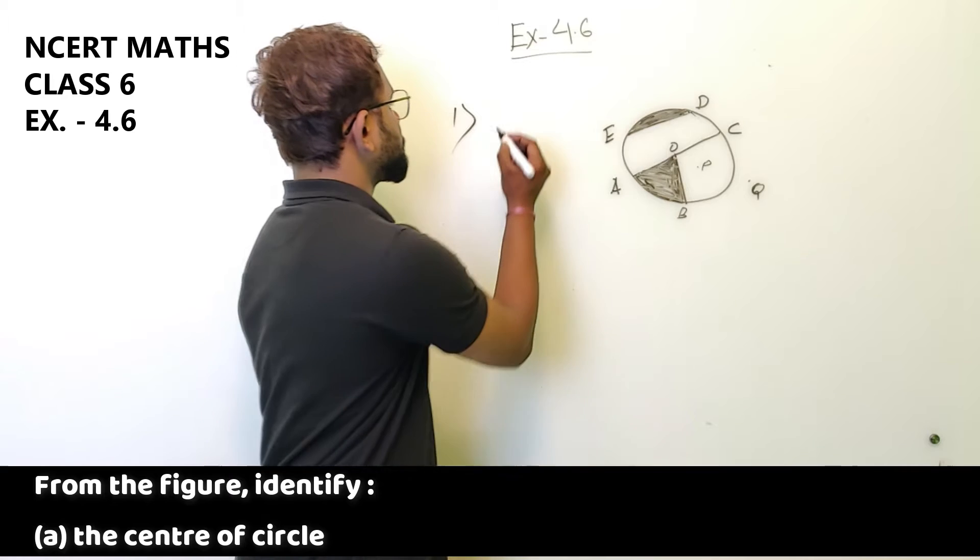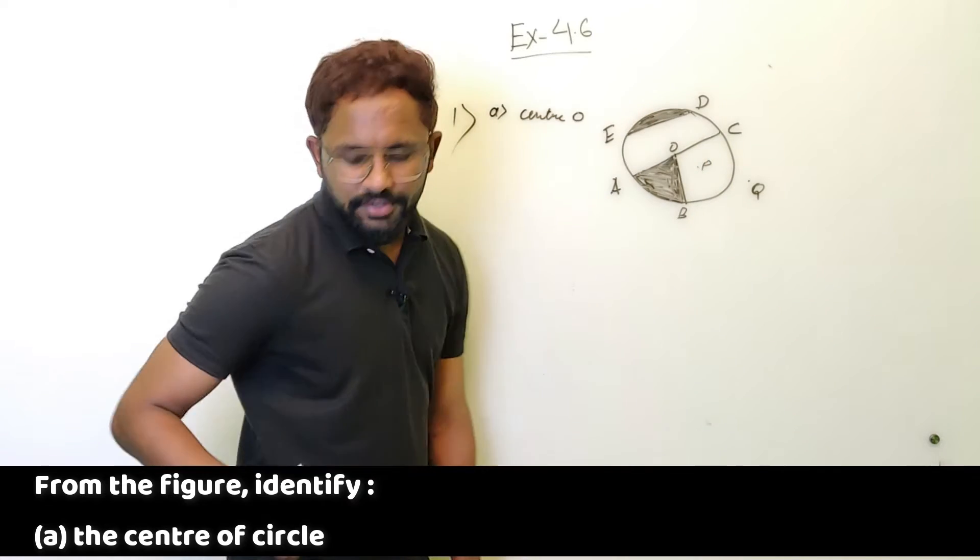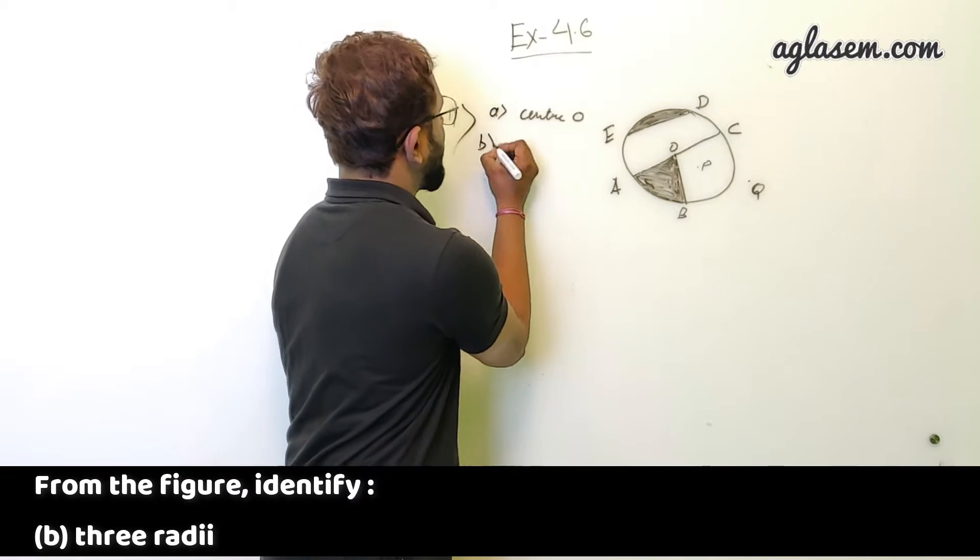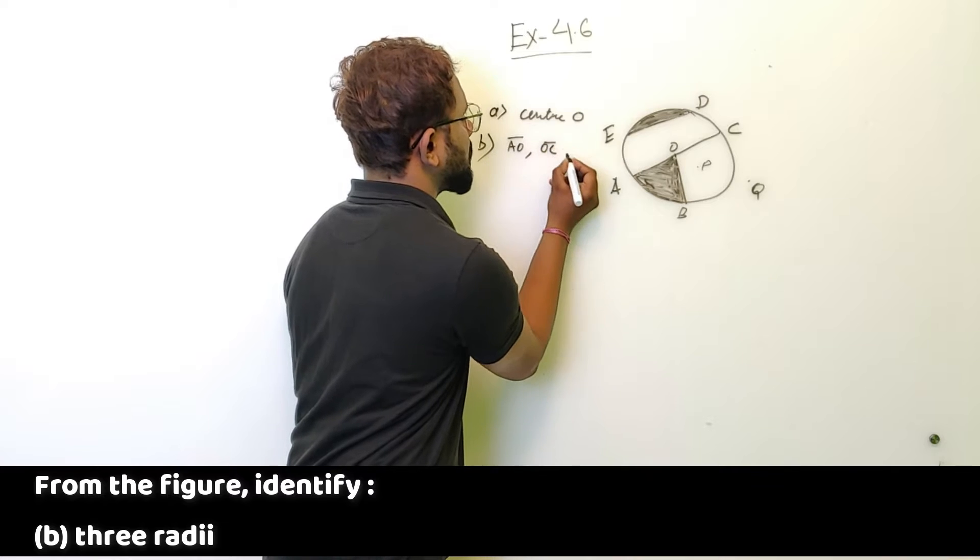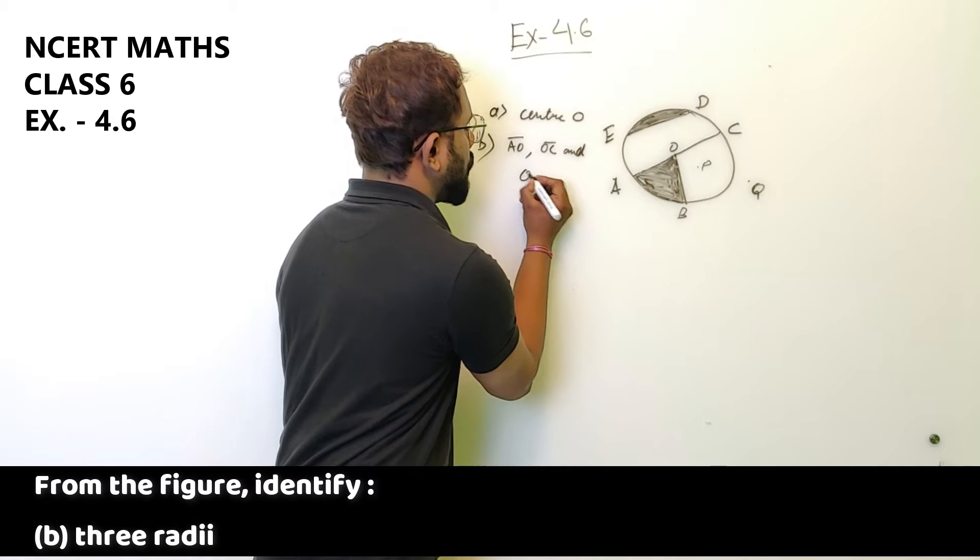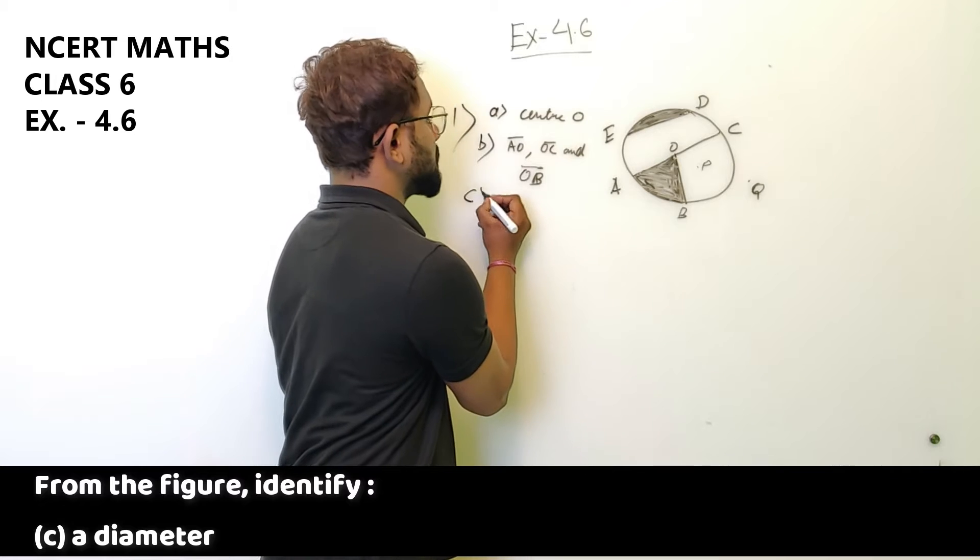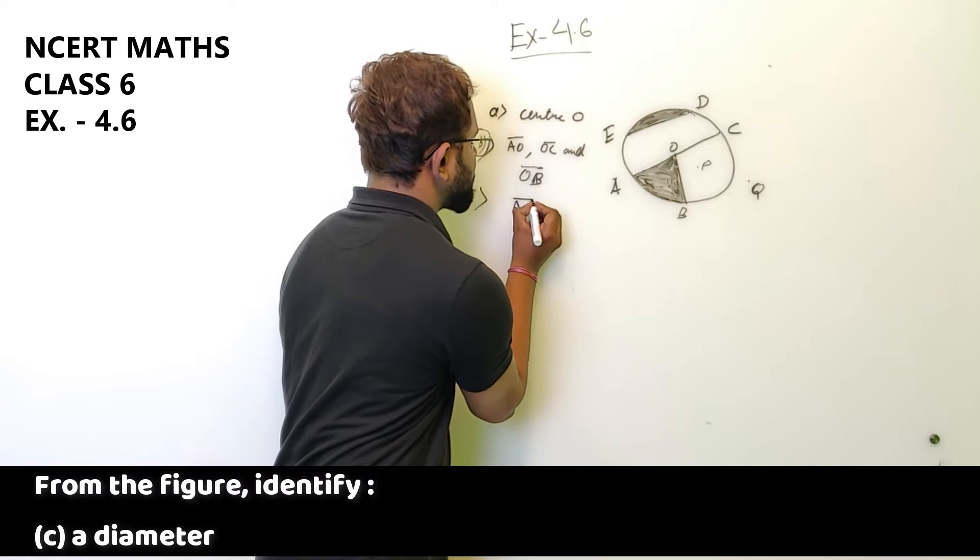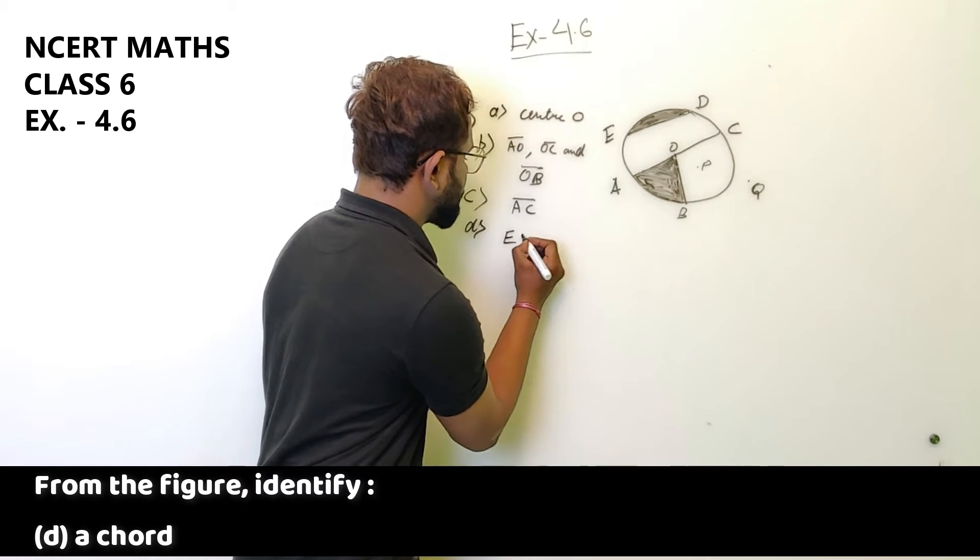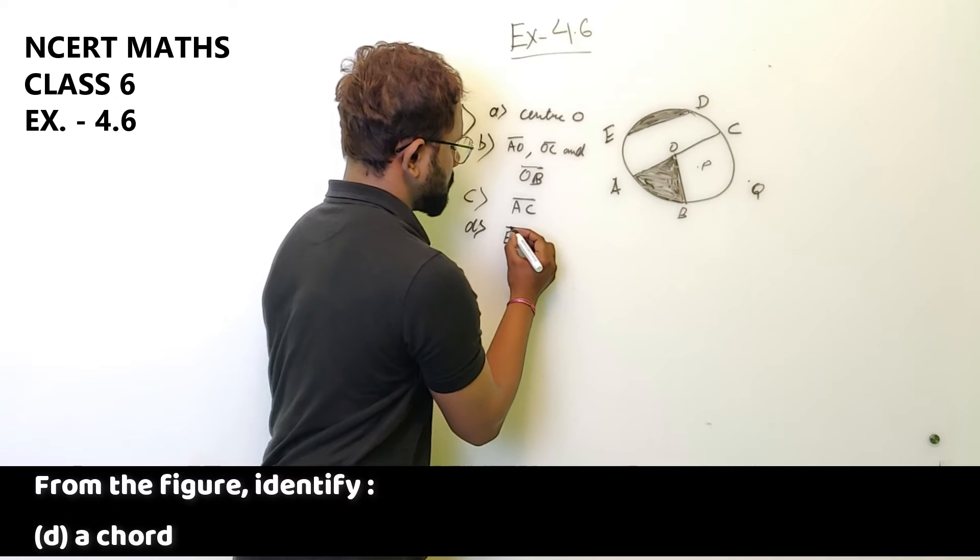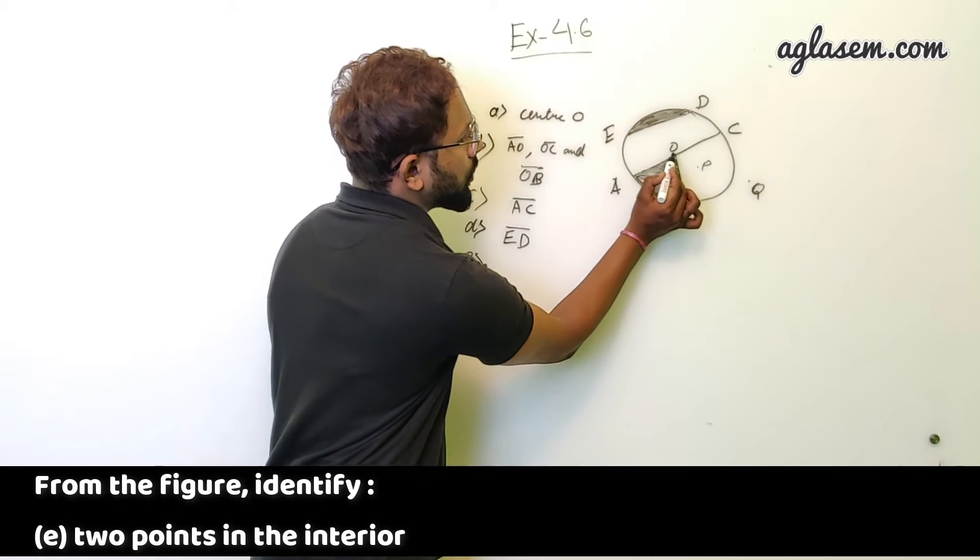So the first part is the center of the circle. The center of the circle is center O. This is the center of the circle. B is three radii. So the three radii are AO, OC, and OB. A diameter is AC. The D part is a chord, so chord is ED. This is the chord.